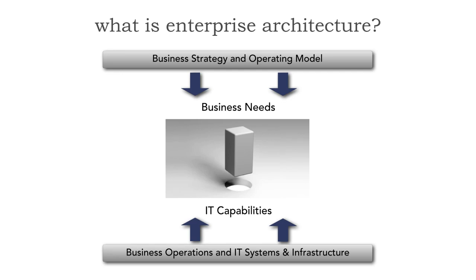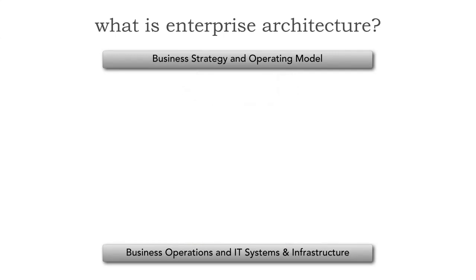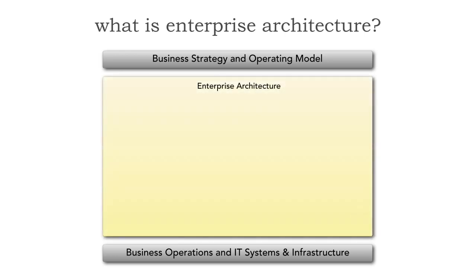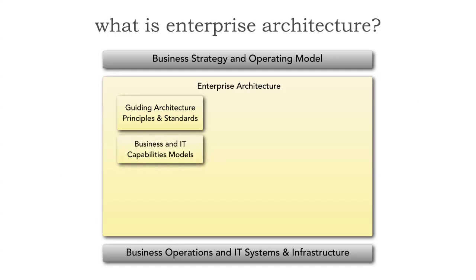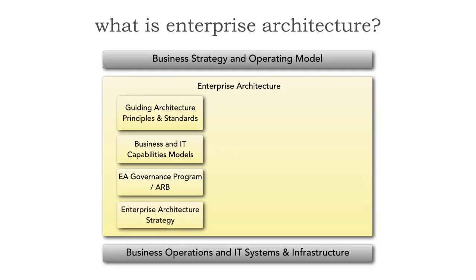Let's see how enterprise architecture fits within this context, because between the business strategy and operating model and those operations, IT systems, and the infrastructure is enterprise architecture — it fits right in between these. Within enterprise architecture, we have several things: guiding architecture principles and standards, business and IT capability models, governance programs including architecture review boards, and that overall enterprise architecture strategy about the approach and communication models within the enterprise to bridge these.